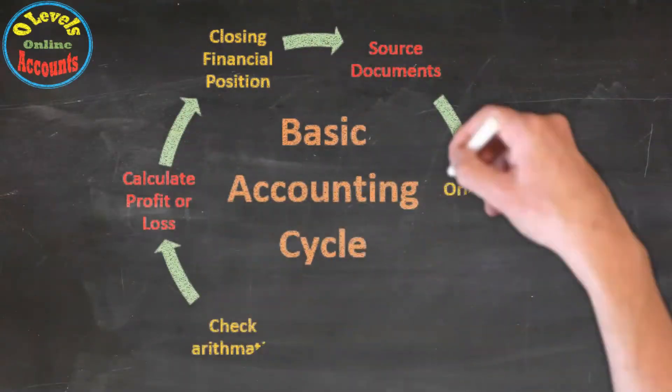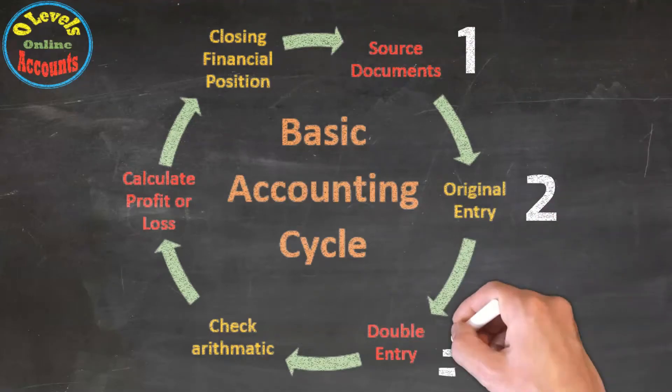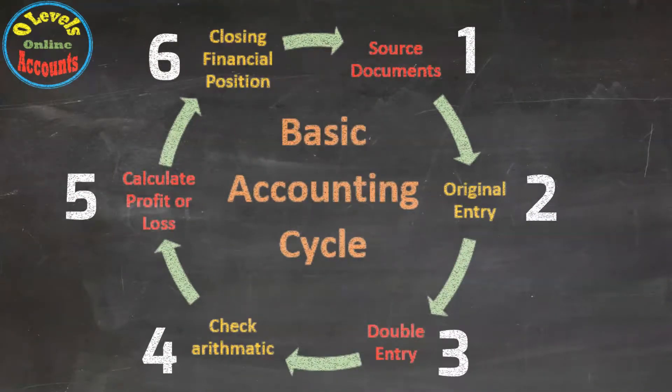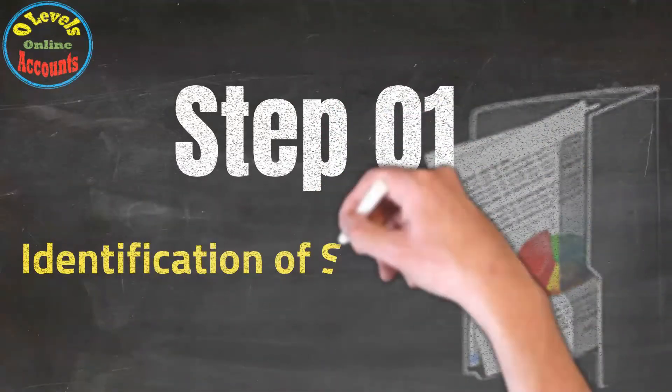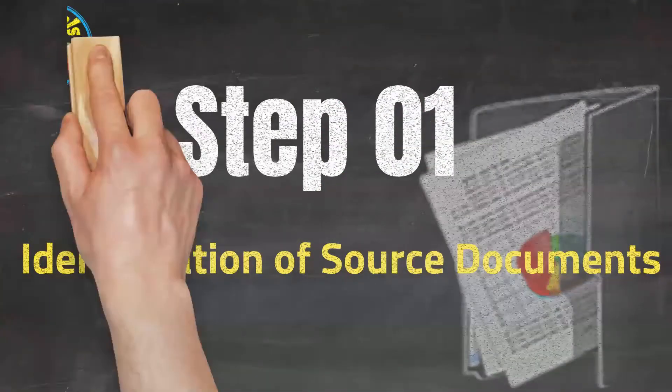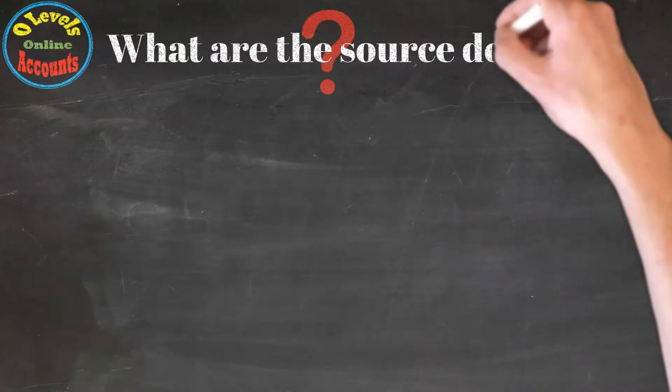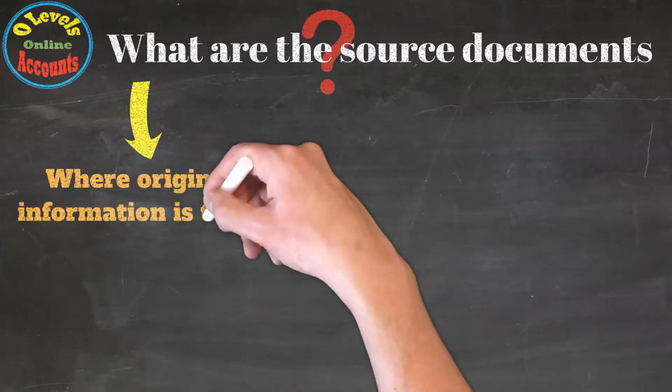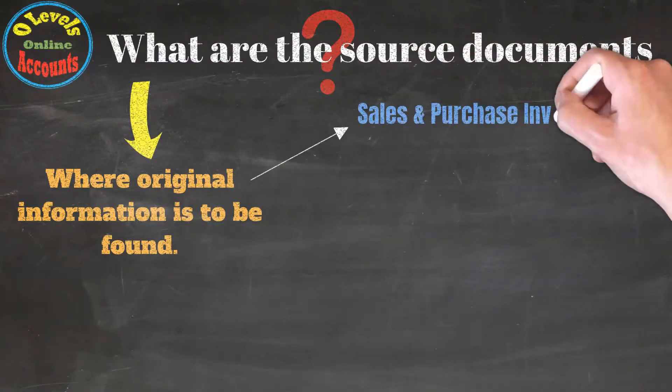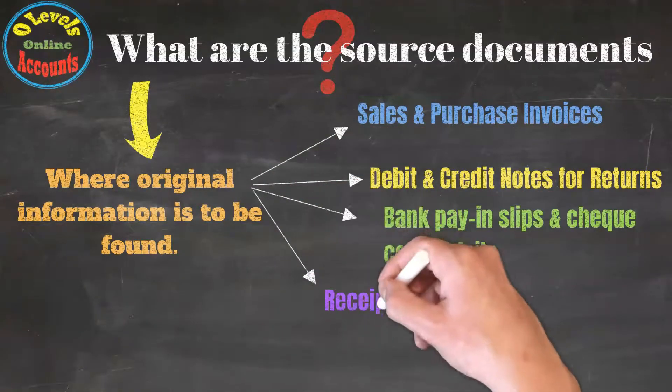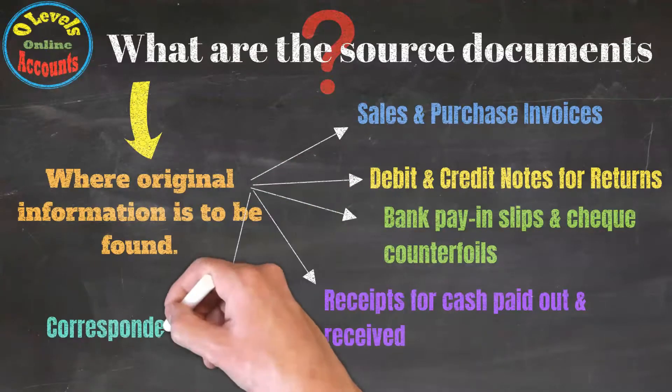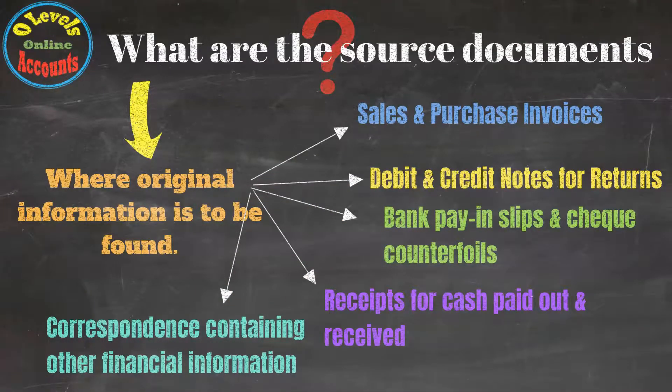These are the six steps in the basic accounting cycle. The first step is identification of source documents, where original information is found. These documents include sales and purchase invoices, debit and credit notes for returns, paying-in slips and check counterfoils, cash receipts, and correspondence containing financial information. These source documents must be identified first in the process.